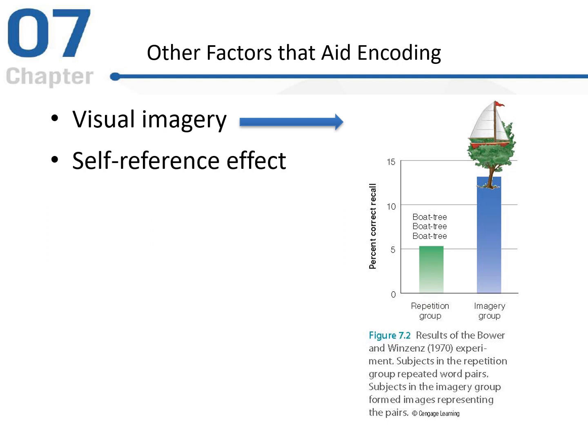There's also something called the self-reference effect. In this particular type of encoding, people are told to associate words they're trying to remember with themselves in some way. For example, if you're trying to remember the word 'happy,' you might say that you are happy. So you basically link all the words or items to be remembered to yourself.